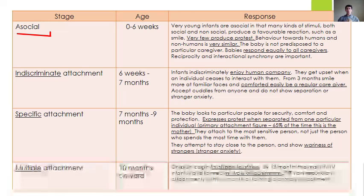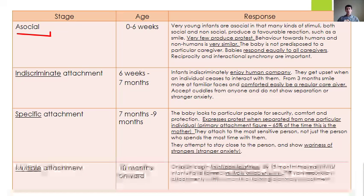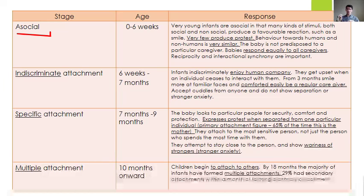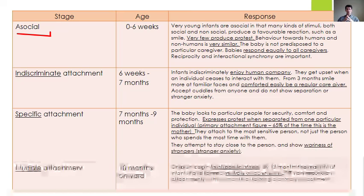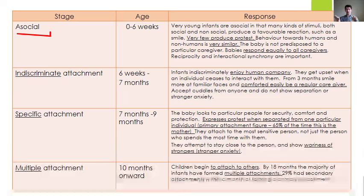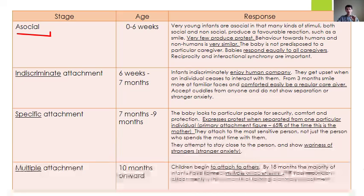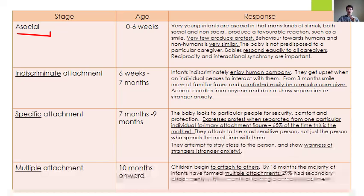From 10 months onwards, children start to show multiple attachments. They have developed their primary caregiver — 65% of the time the mother — but now they attach to other people too. By 18 months they will have many attachments: the father, grandmother, aunties, uncles, cousins. 29% of children develop a secondary attachment once they have their primary attachment, and then they continue developing many multiple attachments after that. Make sure you know the four stages, when they occur, and what happens at each one.